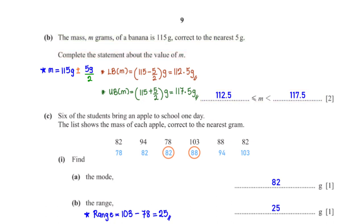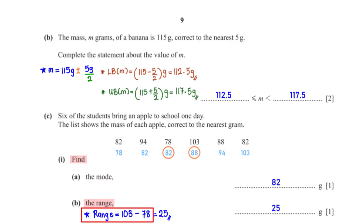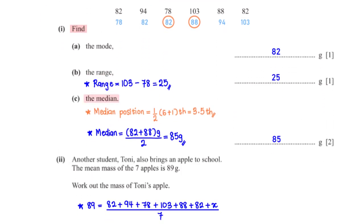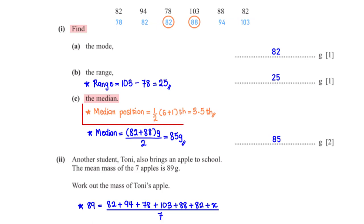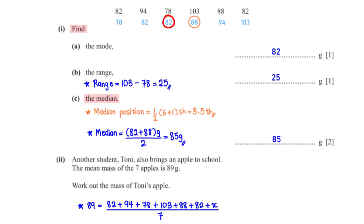Six students bring an apple to school. The masses in grams are listed. Find the mode — the mode is 82, as it appears most frequently. Find the range — the highest value is 103 and the lowest is 78, giving a range of 25. Find the median — arranging in ascending order, using position formula (n+1)/2 with n equals 6 gives position 3.5, so the median is the average of the 3rd and 4th values: (82 + 88) ÷ 2 equals 85.